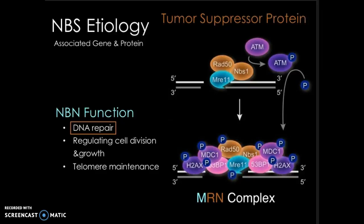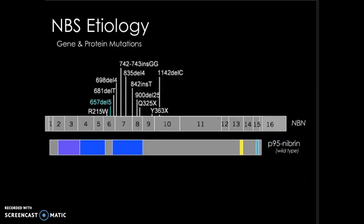So what causes NBS? Mutations to the NBN gene. As you can see listed here, there are many different mutations that have been linked to the disease. However, the one highlighted in light blue, 657 deletion 5, is by far the most common. It is a deletion of 5 nucleotides in the 6th exon of the gene.